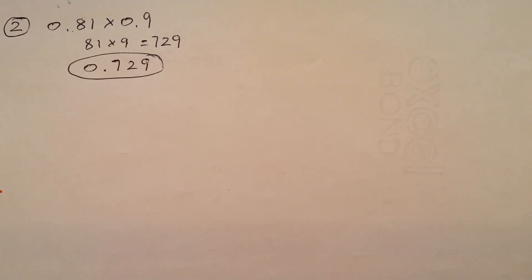Easy, right? So, ignore the decimal. Multiply the number. Put the decimal back from right to left. Count the steps back. And put it back. Easy method. Hope you got it.